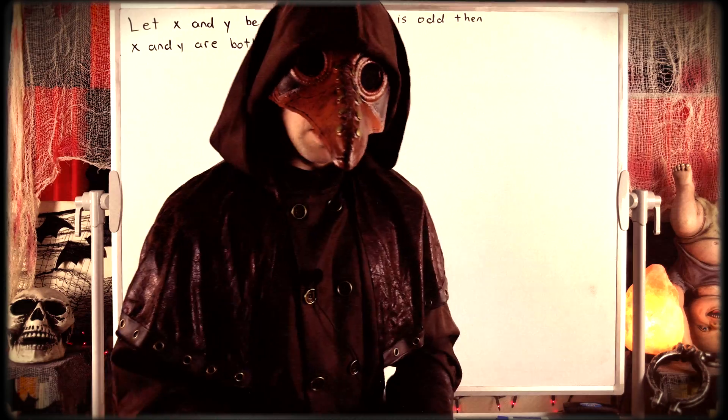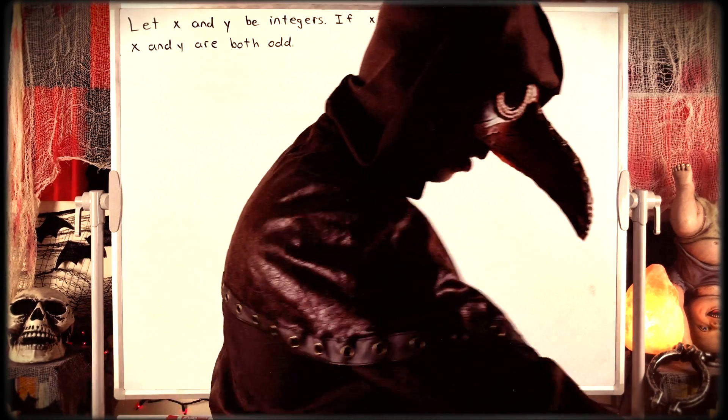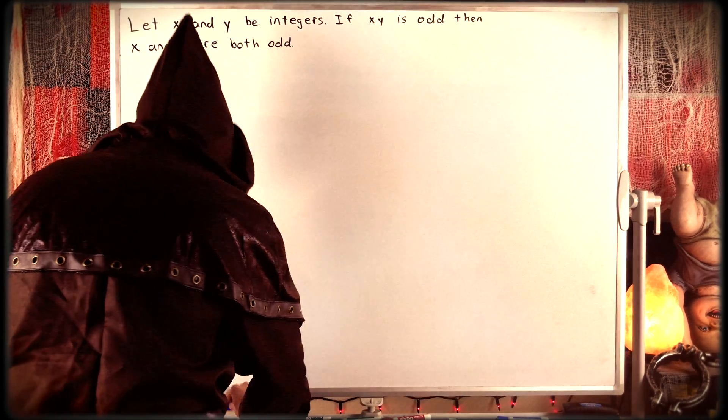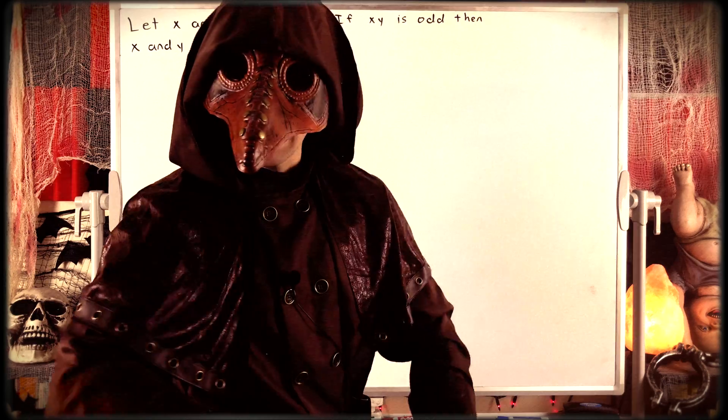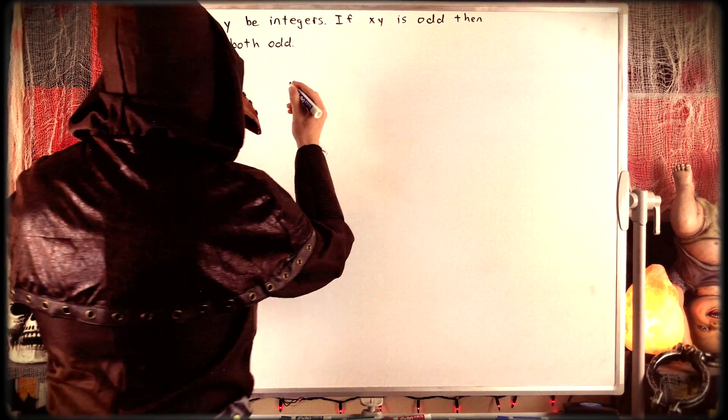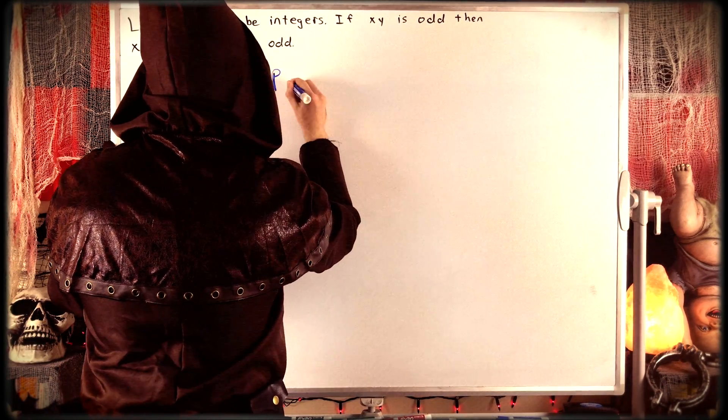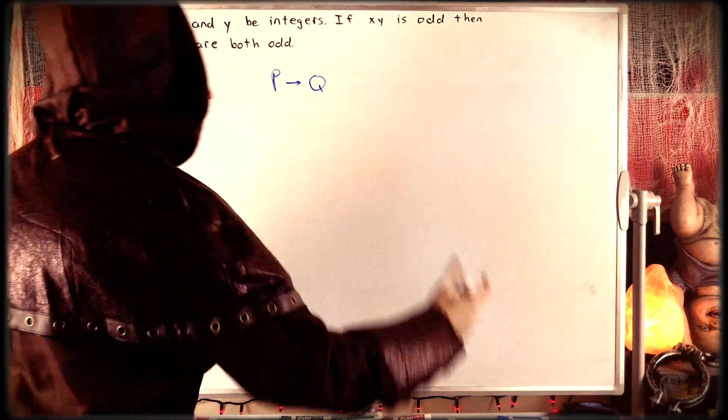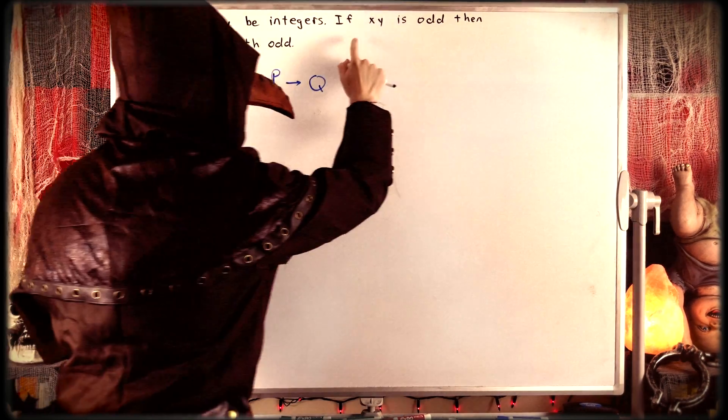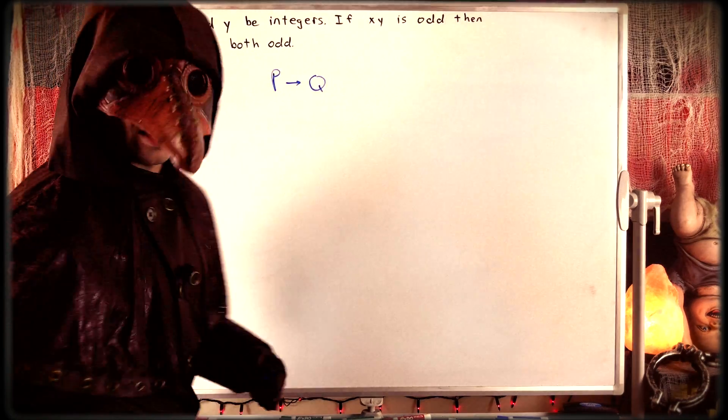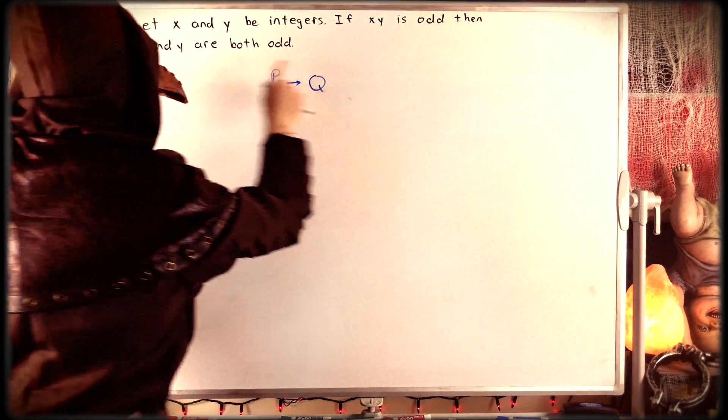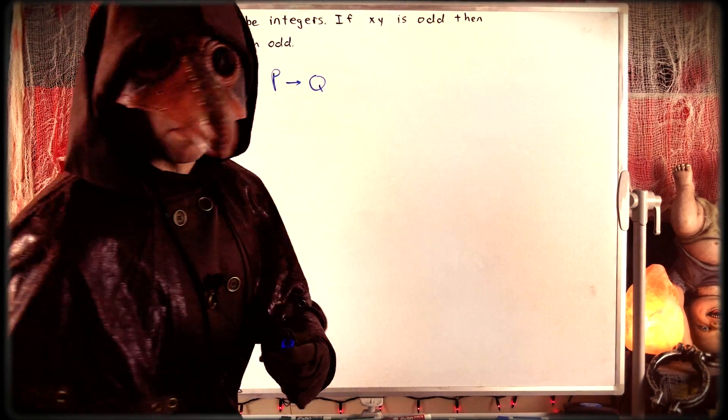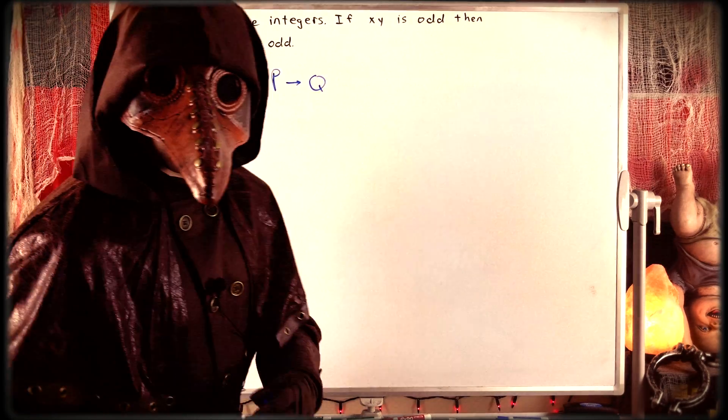I'm assuming most of you are already familiar with contrapositives, but let's begin with a quick recap just to bring us all up to speed. Suppose we have a statement like p implies q. In this case, the statement is that for integers x and y, if xy is odd, that's p, well that must imply that x and y are both odd, that's q, the conclusion.